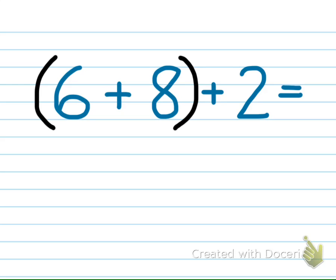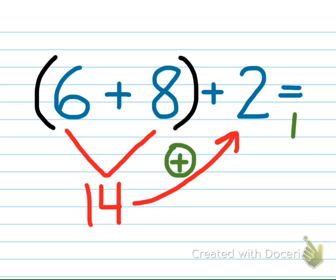In the first example, the parentheses are around the numbers 6 and 8. To solve the problem, you first find the sum of the addends inside the parentheses. 6 plus 8 equals 14. Then you add 14 to the 2 to get a total of 16.